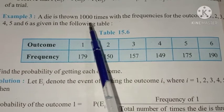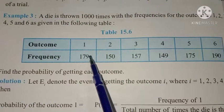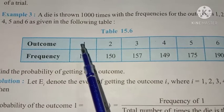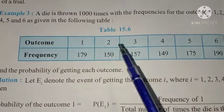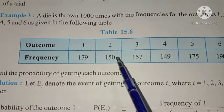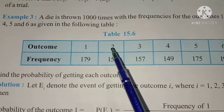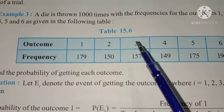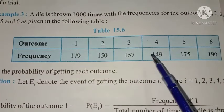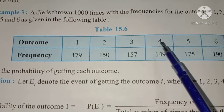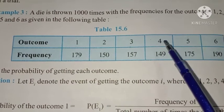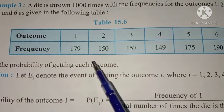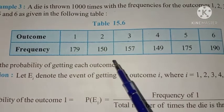Out of 1000 times, the number 1 comes 179 times, number 2 comes 150 times, number 3 comes 157 times, number 4 comes 149 times, and so on. Our question is: what is the probability of getting each outcome?